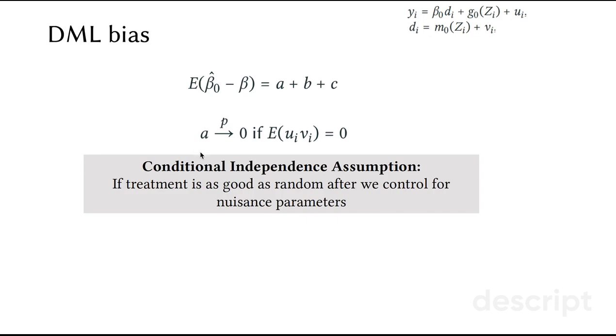The first term disappears if the following condition is satisfied, and this condition is satisfied by our conditional independence assumption. If treatment is as good as random after we control for nuisance parameters, we also know that this would be true.